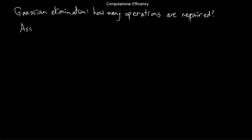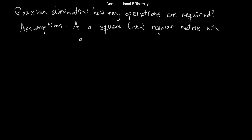That question is pretty broad, so we're going to make some simplifying assumptions. The first assumption is that my matrix, which I'll call A, is square. This is not absolutely required to do a row reduction, but it will make my numbers come out nicely. And I need to assume that my matrix is regular, so I won't have to keep track of any of the permutations of the rows when I do a row reduction. And I'm going to assume that my entries are generic — meaning I'm not going to make any particular assumptions about the form of my matrix.